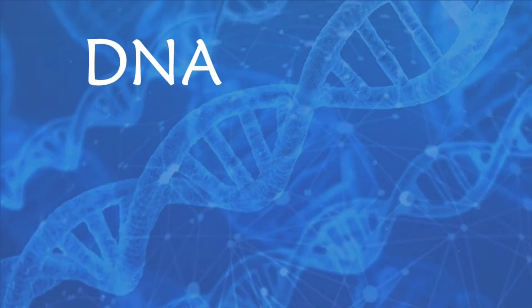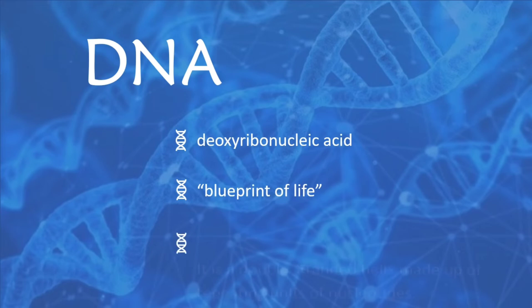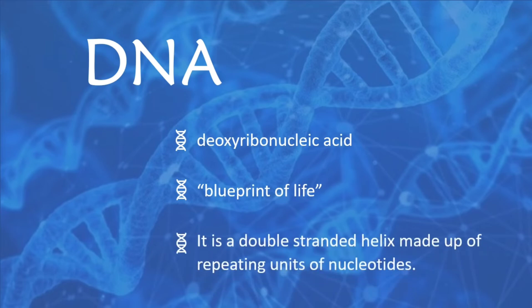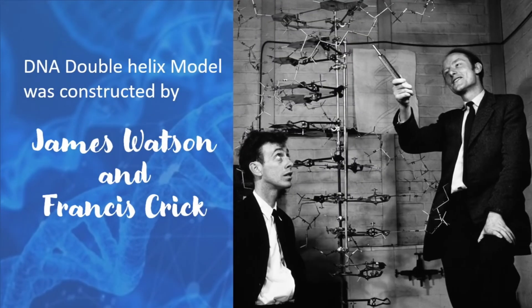DNA, or deoxyribonucleic acid, contains the information to form and control the physical makeup and the chemical processes of an organism. It is also called the blueprint of our life. It is the double-stranded helix made up of repeating units of nucleotides. James Watson and Francis Crick constructed the DNA double helix model, which paved the way to the understanding of the DNA.